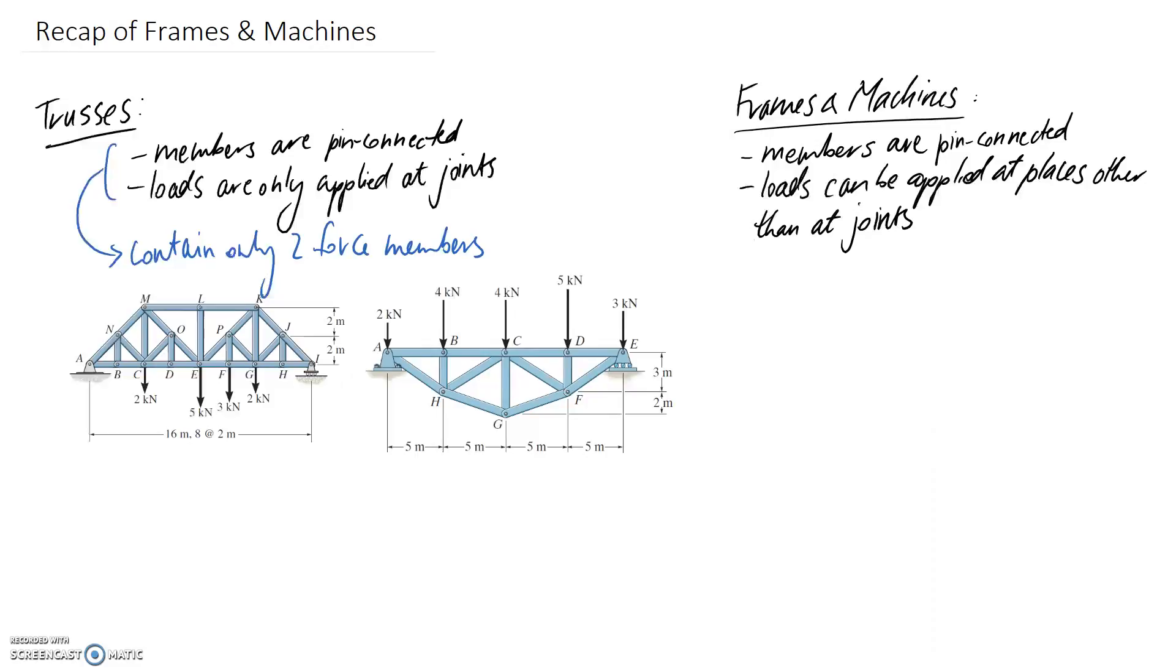So if, for example, this structure here, suddenly we decided to have a change in the loading, and we were going to consider a force applied here through the center of one of the members, and even like here, for example, through another center of a member, we wouldn't be able to analyze this as a truss anymore. It would need to be analyzed as a frame or a machine.